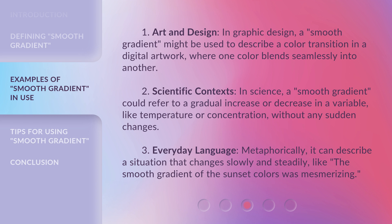In art and design, a smooth gradient might be used to describe a color transition in a digital artwork, where one color blends seamlessly into another. In science, a smooth gradient could refer to a gradual increase or decrease in a variable, like temperature or concentration, without any sudden changes. Metaphorically, it can describe a situation that changes slowly and steadily, like, 'the smooth gradient of the sunset colors was mesmerizing.'